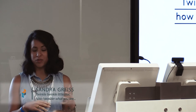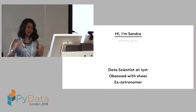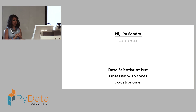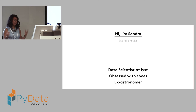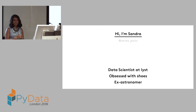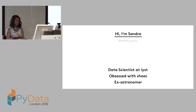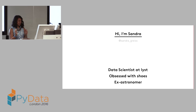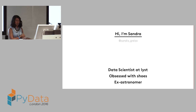Today I'm mostly going to be talking about a little classifier built to detect a certain type of star that I worked on during my time as an astronomer. I'm Sandra, a data scientist at List — an online fashion platform where we aggregate millions of products from the web and have quite a good data science team. But I'm not talking about that today; instead I'm going to talk about astronomy and astrophysics, because that's my background.